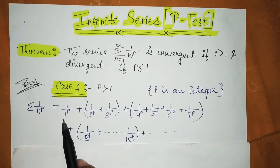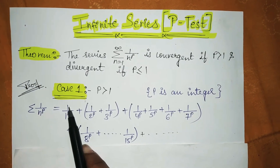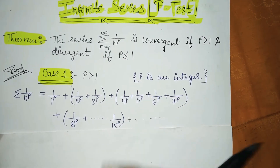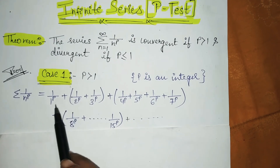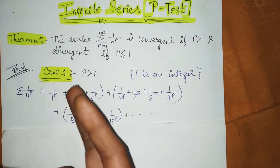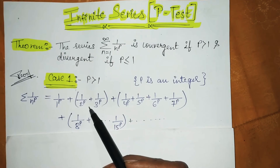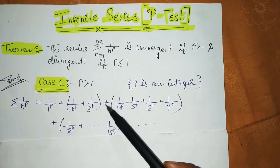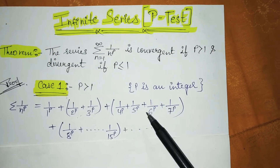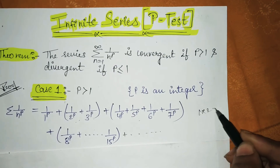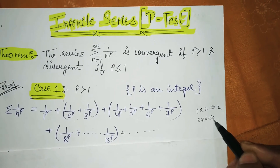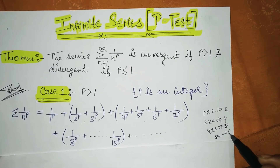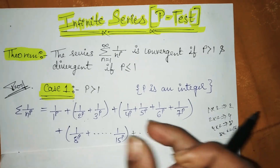We leave the first term and then combine two terms together. The reason we do this grouping is: starting from 1, we take twice of 1 to get 2, twice of 2 to get 4, twice of 4 to get 8, twice of 8 to get 16. So we combine terms accordingly — first one single term, then two terms, then four terms, then eight terms, and so on.